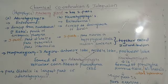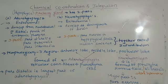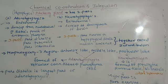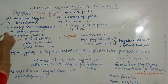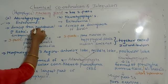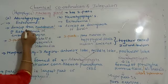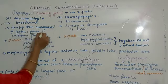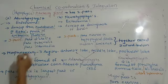The adenohypophysis is developed from the oropharyngeal ectoderm, specifically from Rathke's pouch of the embryonic pharynx.